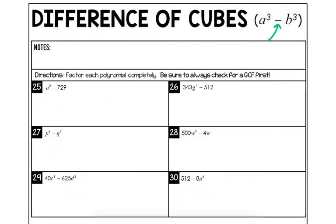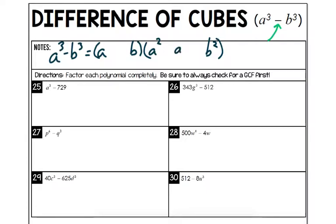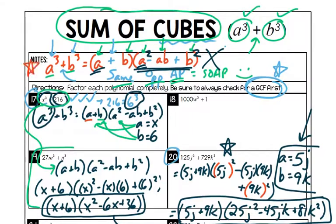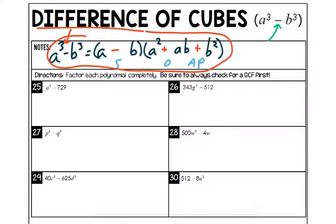The difference of cubes is almost exactly the same as the sum of cubes — you just switch the signs using SOAP. The formula is: a³ − b³ = (a − b)(a² + ab + b²). Since the original is now minus, the first sign is the same (minus), the opposite of minus is plus, and the last sign is always positive. If you remember SOAP, you're good to go.